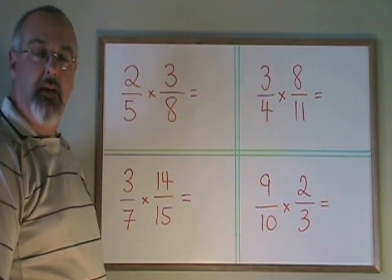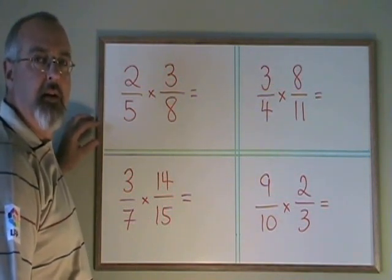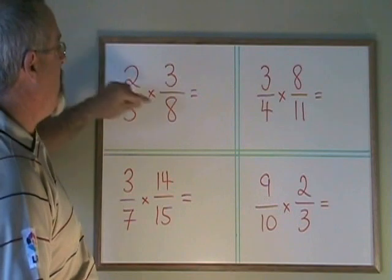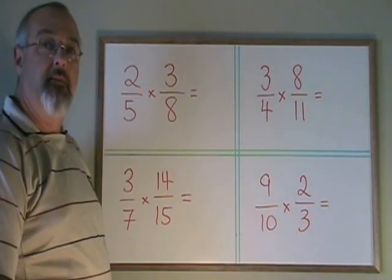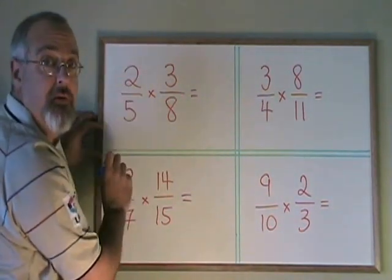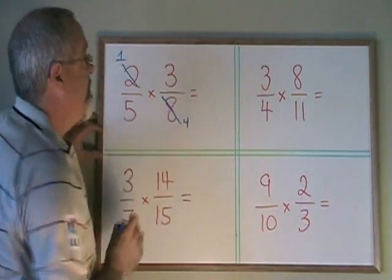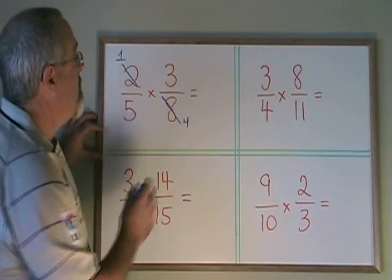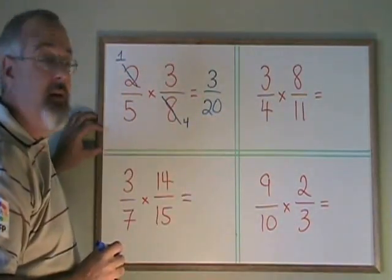Here are some more examples of canceling. In this case, we don't have the same number on the top and the bottom to cancel. Instead, we have two different numbers that share a common factor. This time I have a 2 on the top and an 8 on the bottom, and they have a common factor of 2. So when I'm canceling, I can divide 2 from each: 2 divided by 2 is 1, and 8 divided by 2 is 4. Now I do my multiplication: 1 times 3 is 3, and 5 times 4 is 20. My final answer is 3/20, which cannot be further reduced.